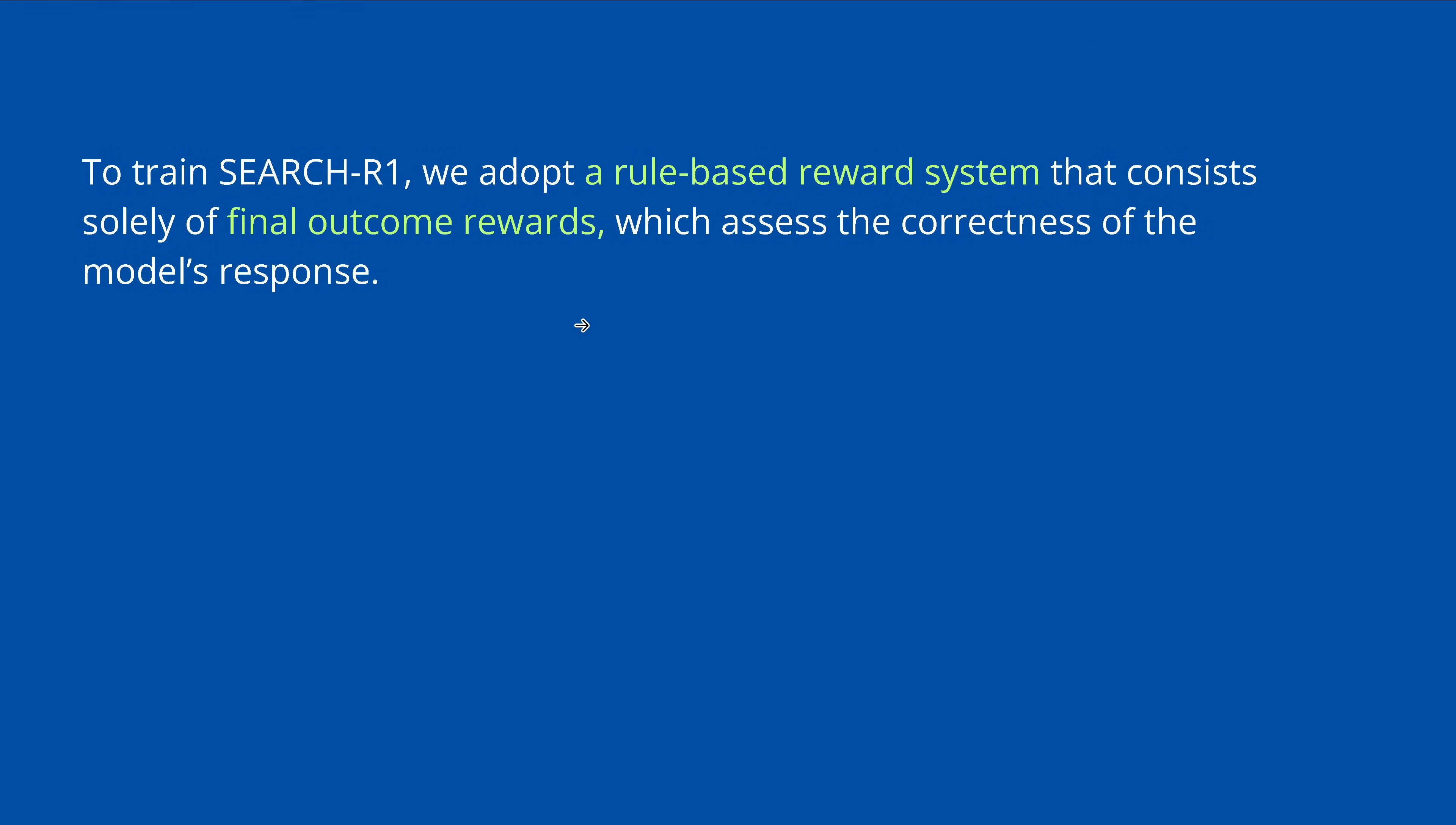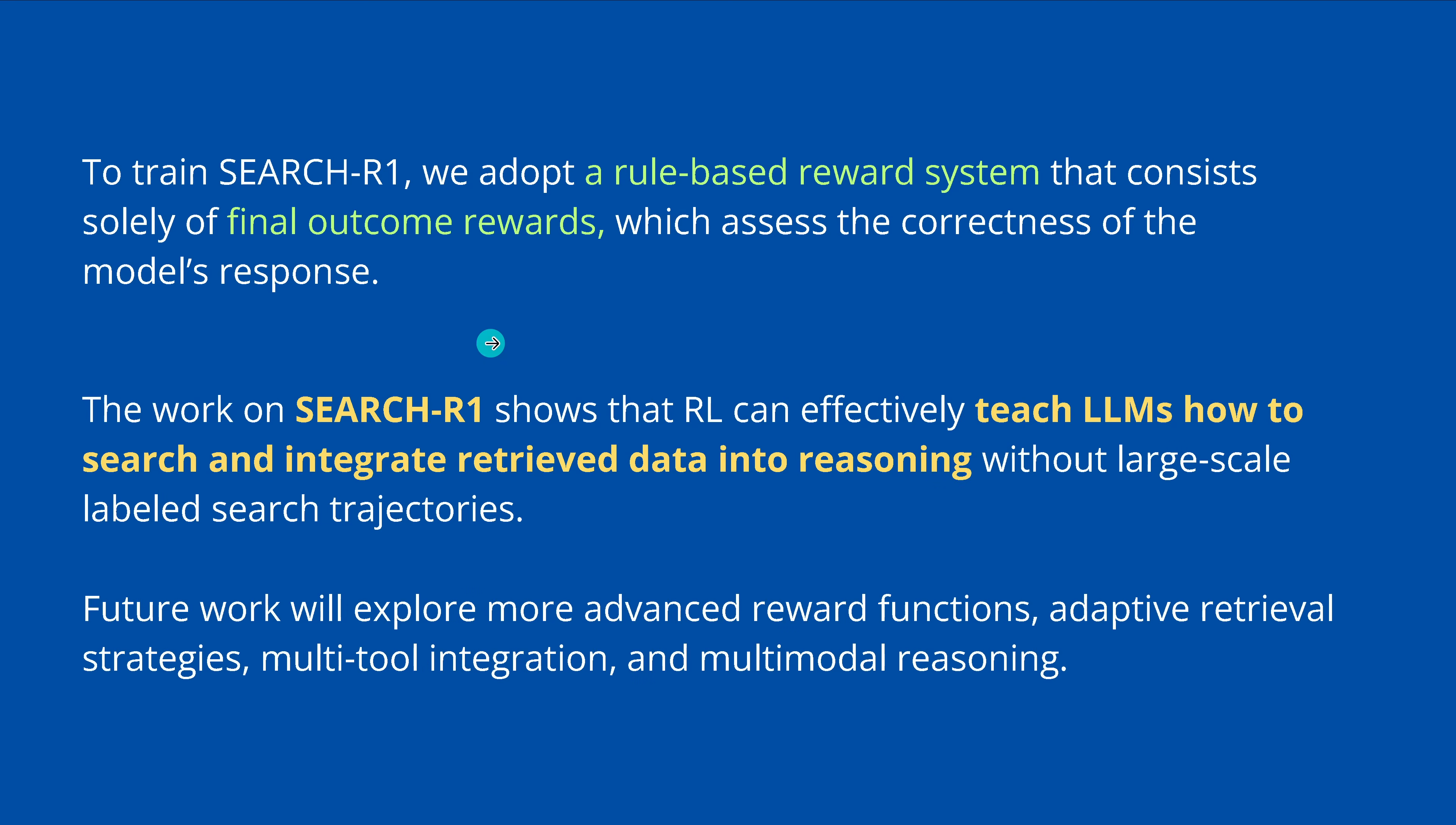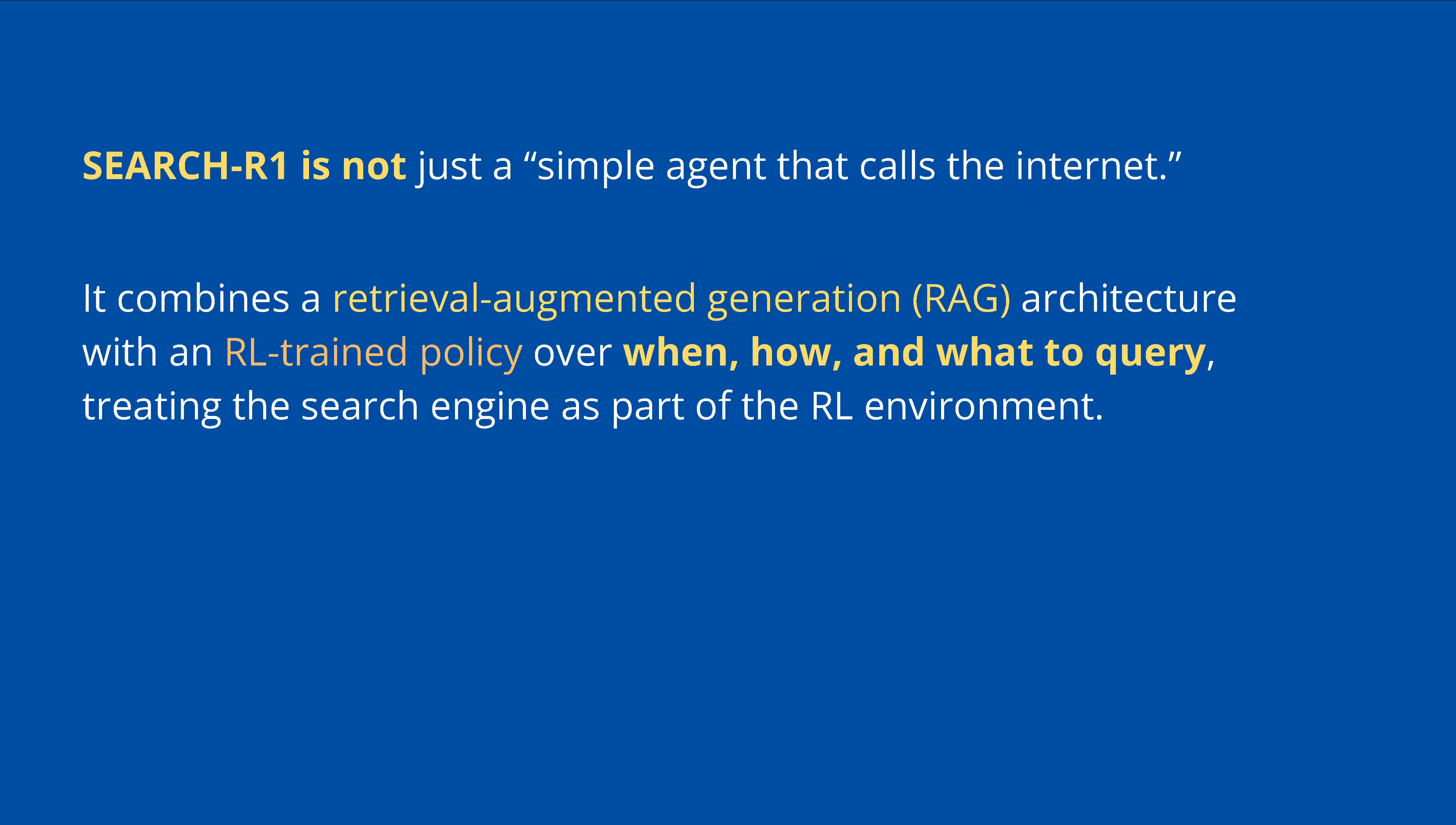You can search as many times as you want. If you find no further external knowledge needed, you can directly provide your answer inside answer and end of answer without any detailed illustrations. So you see, the template is rather simple if you have trained it on this. If you are unfamiliar with any of the mathematical notation or the symbols, here I have a video where I explain in 52 minutes every symbol and every formula and why we build it in this way. Now for the reward system itself, here for the R1 system, they say, we go with the easiest. We go with a rule-based reward system that has only the final outcome rewards.